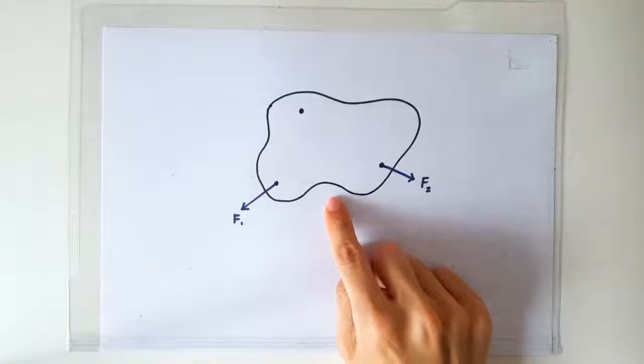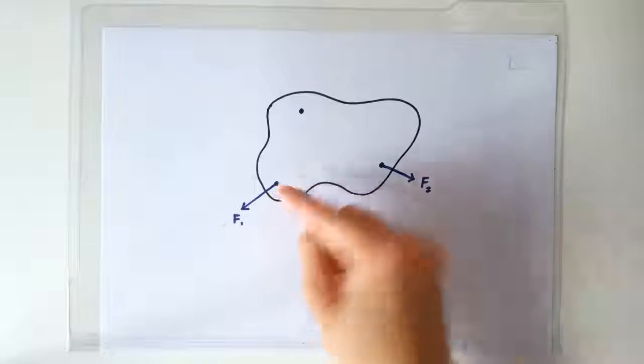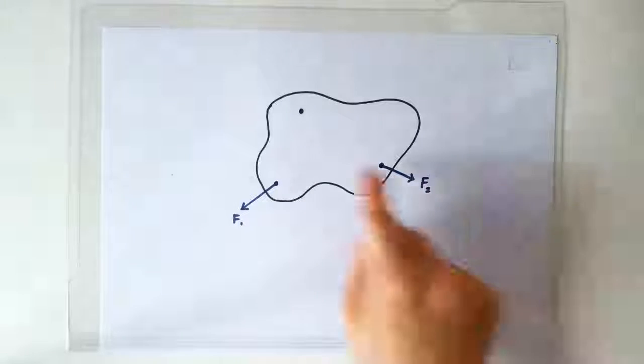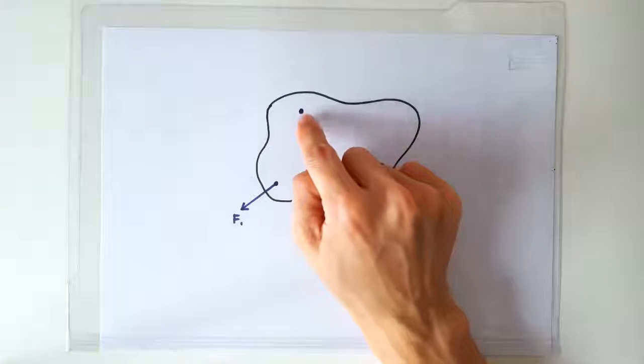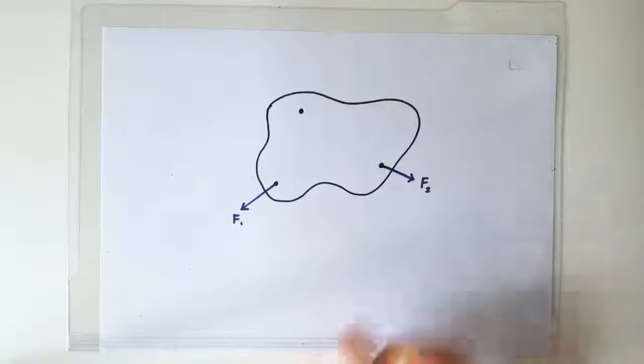So I have this object here experiencing three forces. F1 is applied at this point in this direction, F2 is applied at this point along this direction, and there's a third force F3 that's going to be applied here. In which direction must this force be applied such that this object can be at equilibrium?